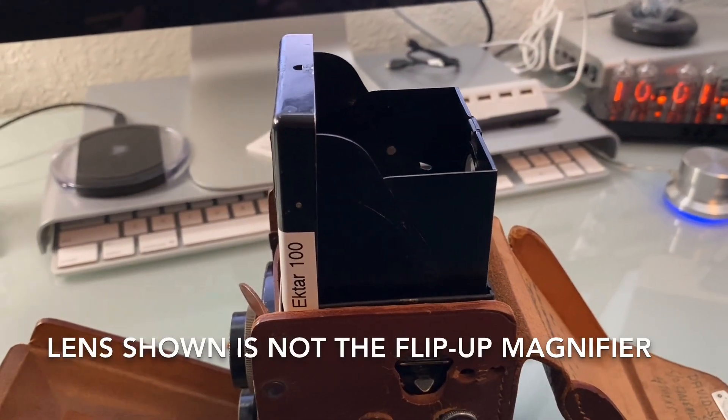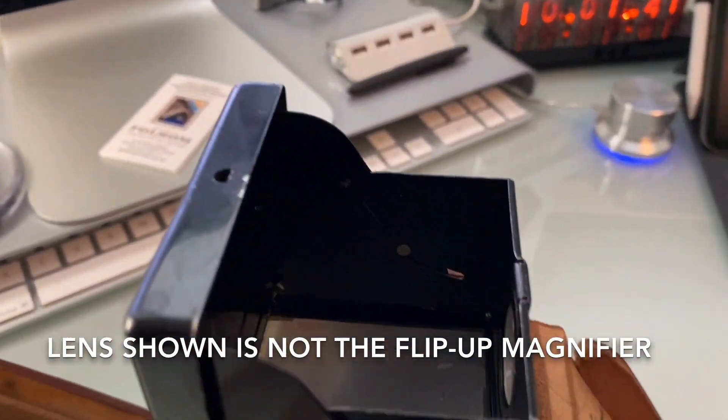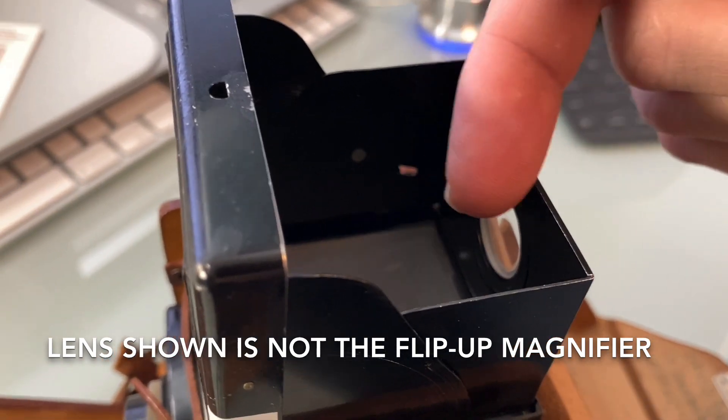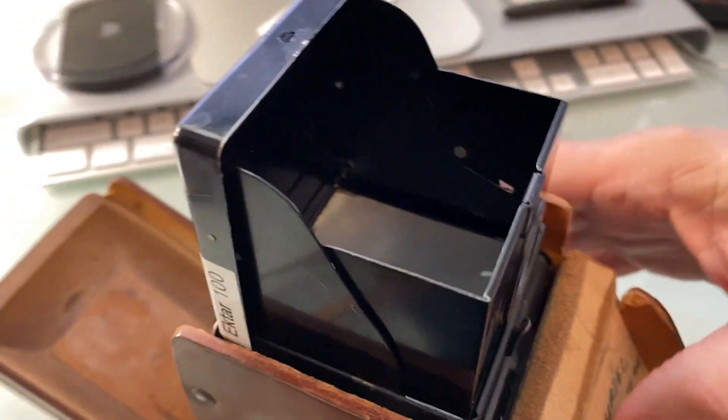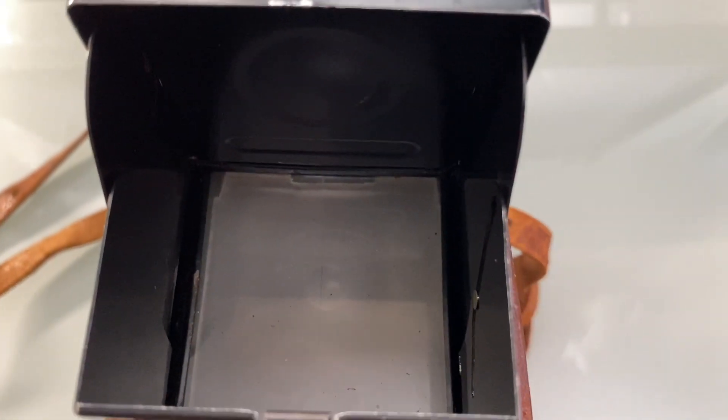Now one feature of the Rolleicords, which is common to most twin lens reflex cameras, is that there is supposed to be a magnifying lens right in here that lets you see a more detailed view of the focusing screen to get really sharp focus.